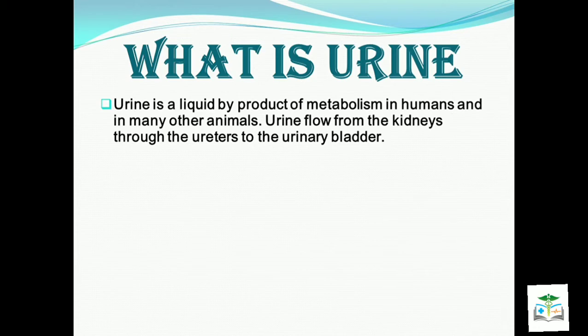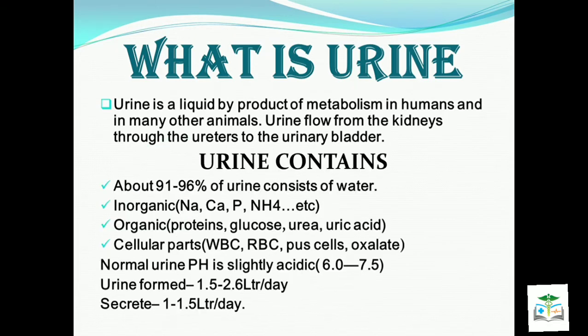About 91-96% of urine is water, and 6-7% consists of inorganic salts along with organic and cellular parts. Normal urine's pH is slightly acidic, around 6 to 7.5. Urine formation is 1.5 to 2.6 liters per day by kidneys, with secretion of about 1.5 liters per day.